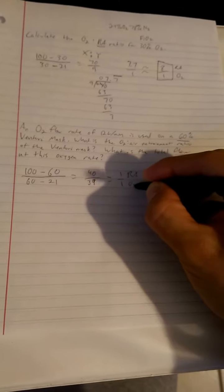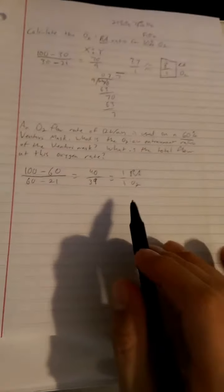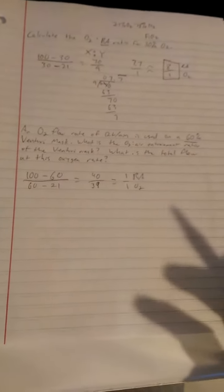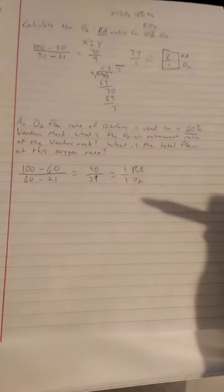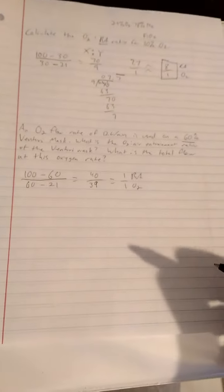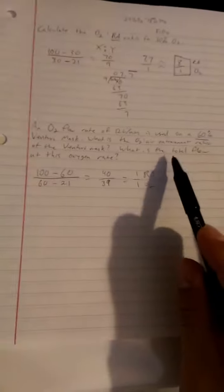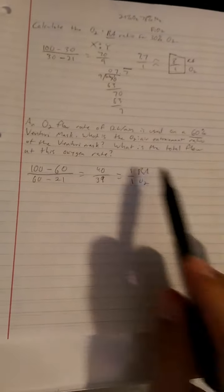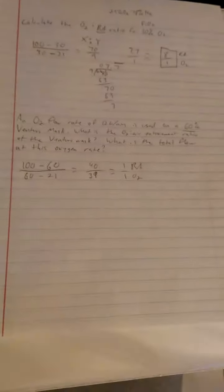I recommend memorizing this kind of stuff if you haven't yet, because that'll come in handy to save you time, perhaps on an exam. That'll save you time so you're not having to do this calculation out. Just a test strategy there. Now that addressed the first part of the question: what is the O2 air entrainment ratio of the venturi mask? It's 1 to 1. What is the total flow?